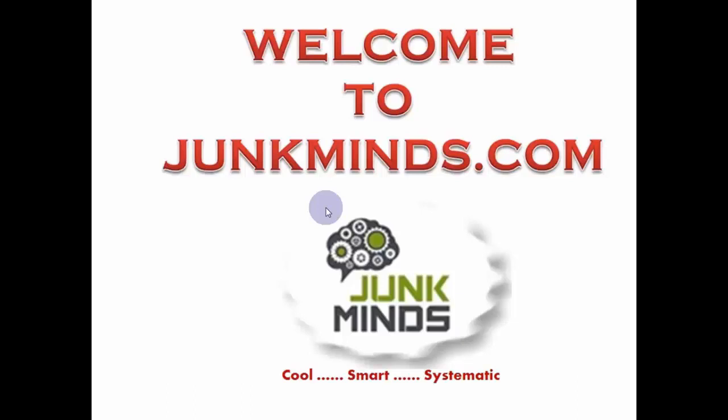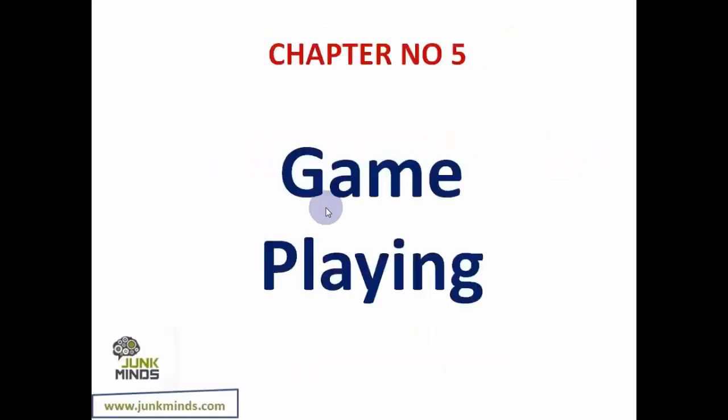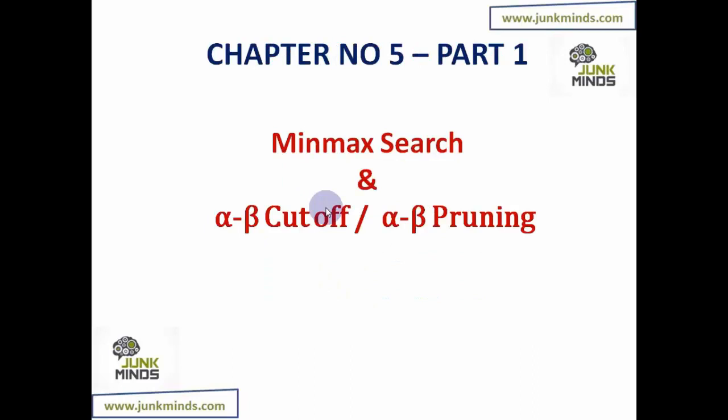Hi guys, welcome back to junkminds.com. Let's go to chapter number 5: Gameplay. This is a small chapter and is essentially an extension of the searching techniques chapter. In this chapter we'll be learning about two different concepts: Minmax search and alpha-beta cutoff, also called alpha-beta pruning. In the first part, let's get started with minmax search and alpha-beta cutoff, and then I'll take you to crypt arithmetic in the second part.